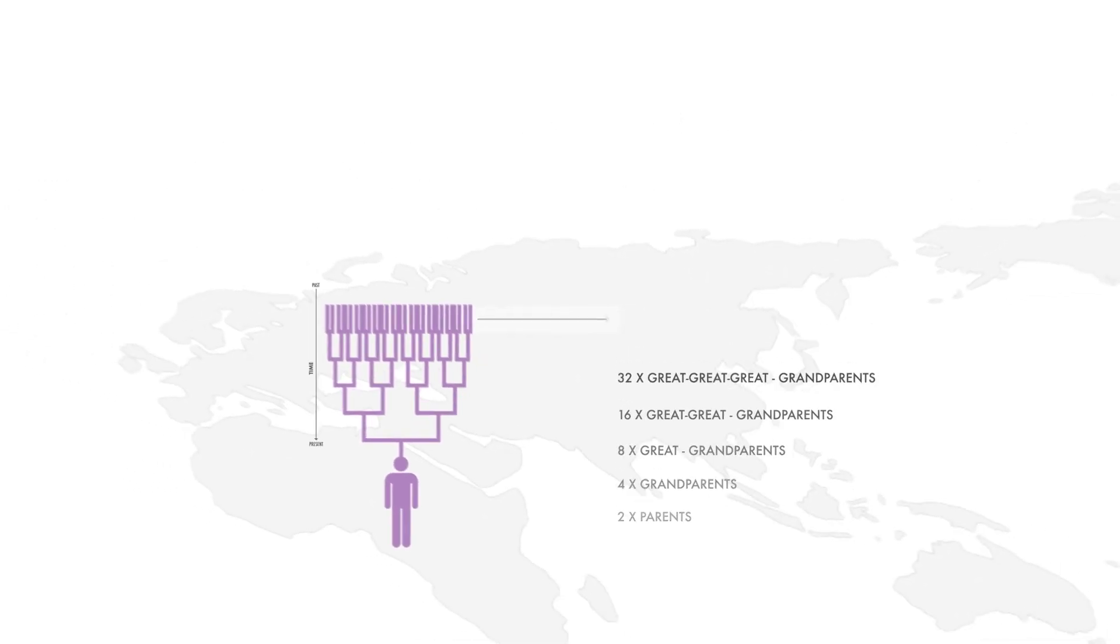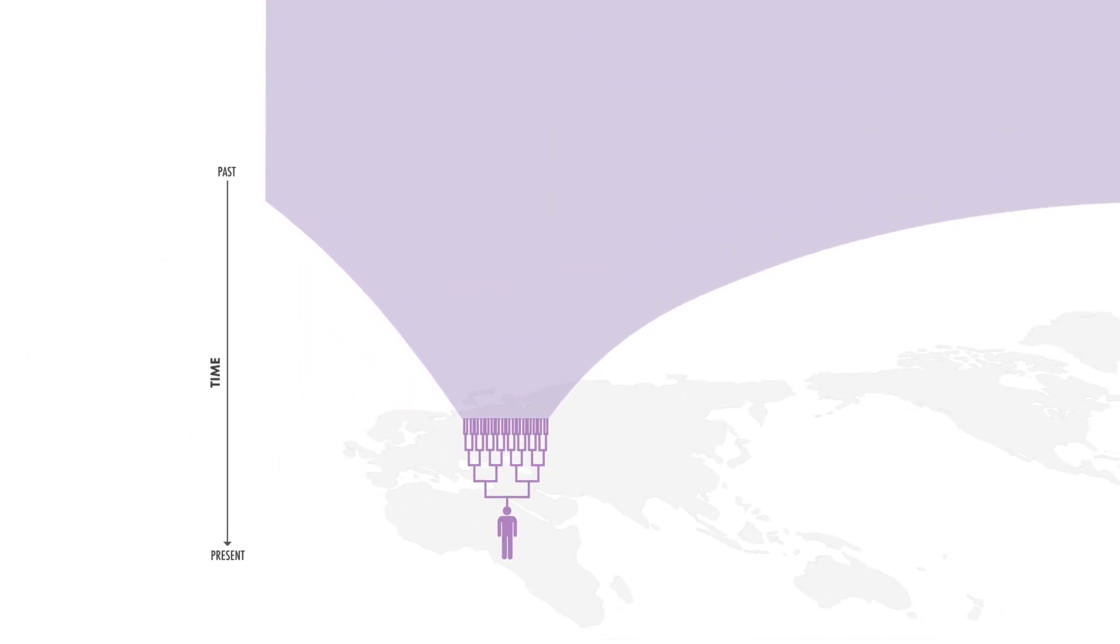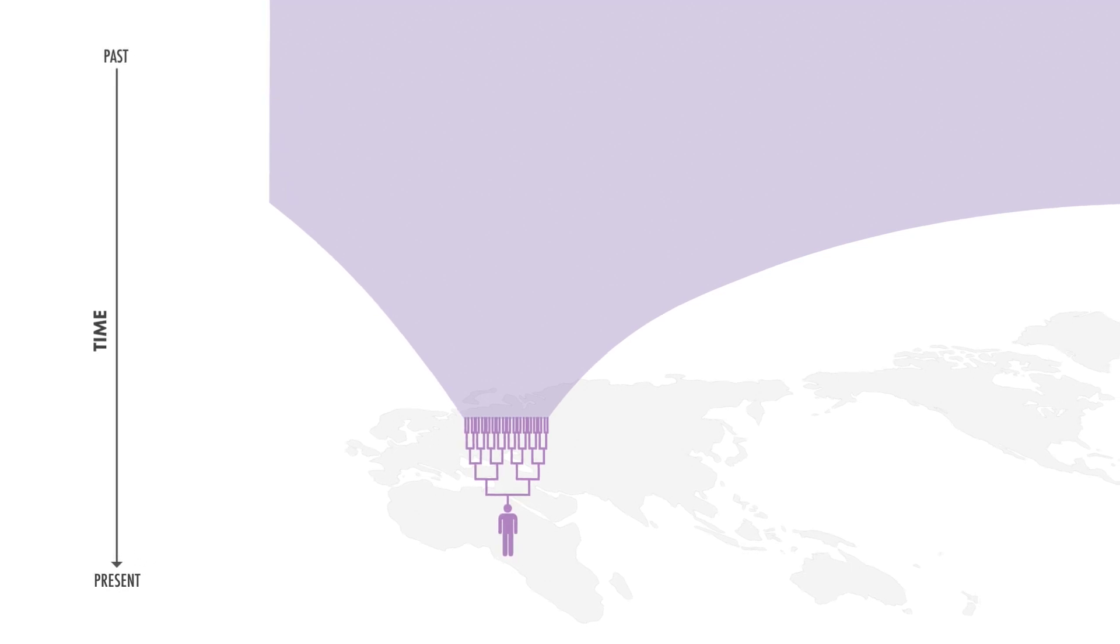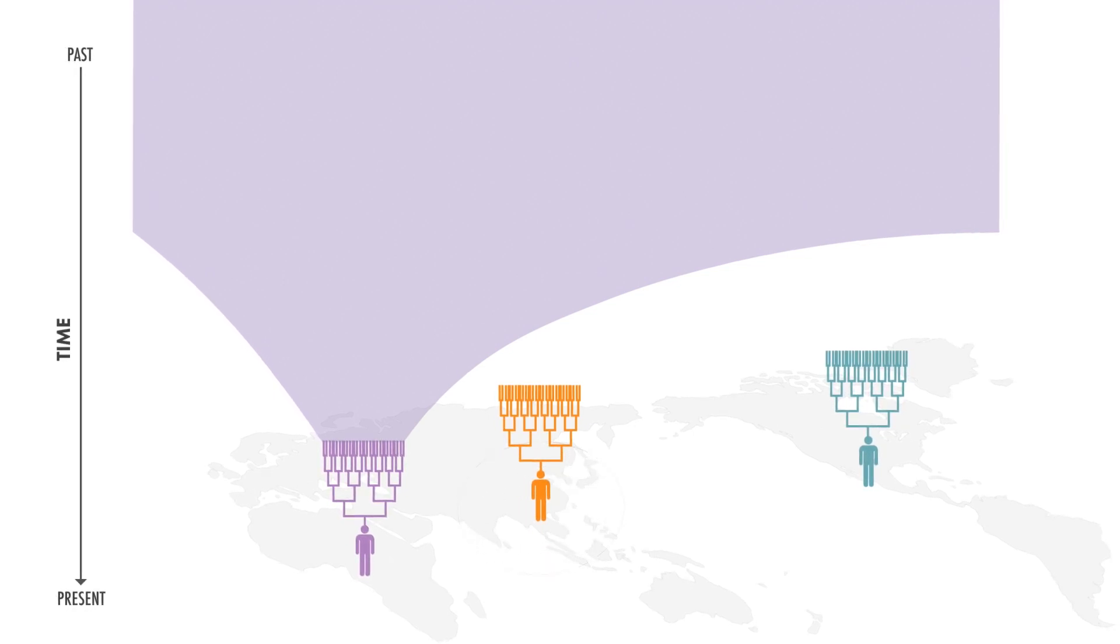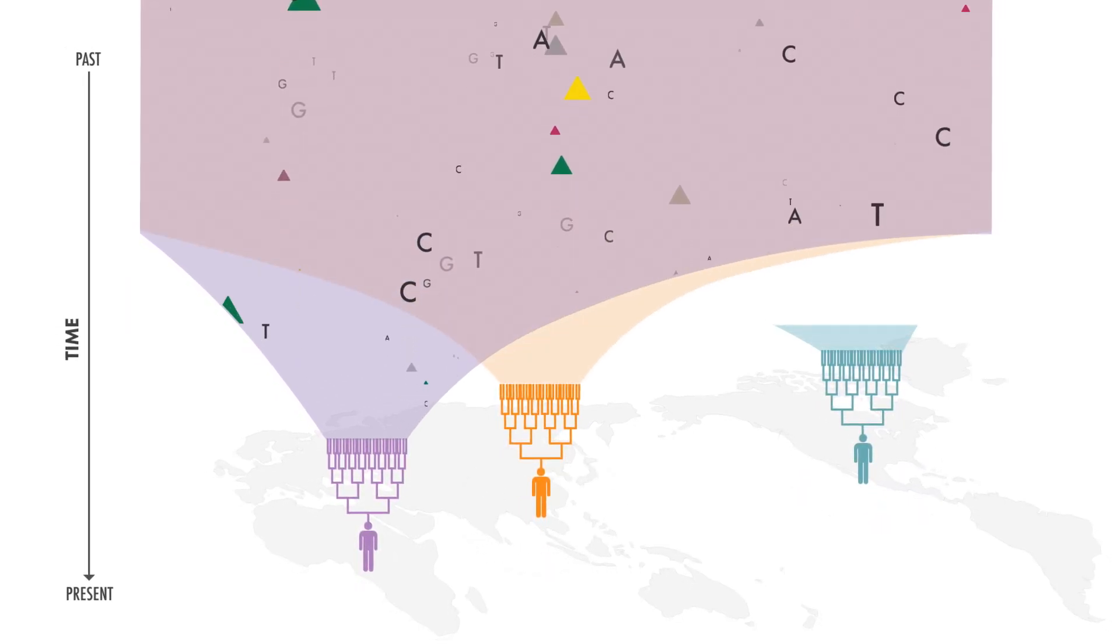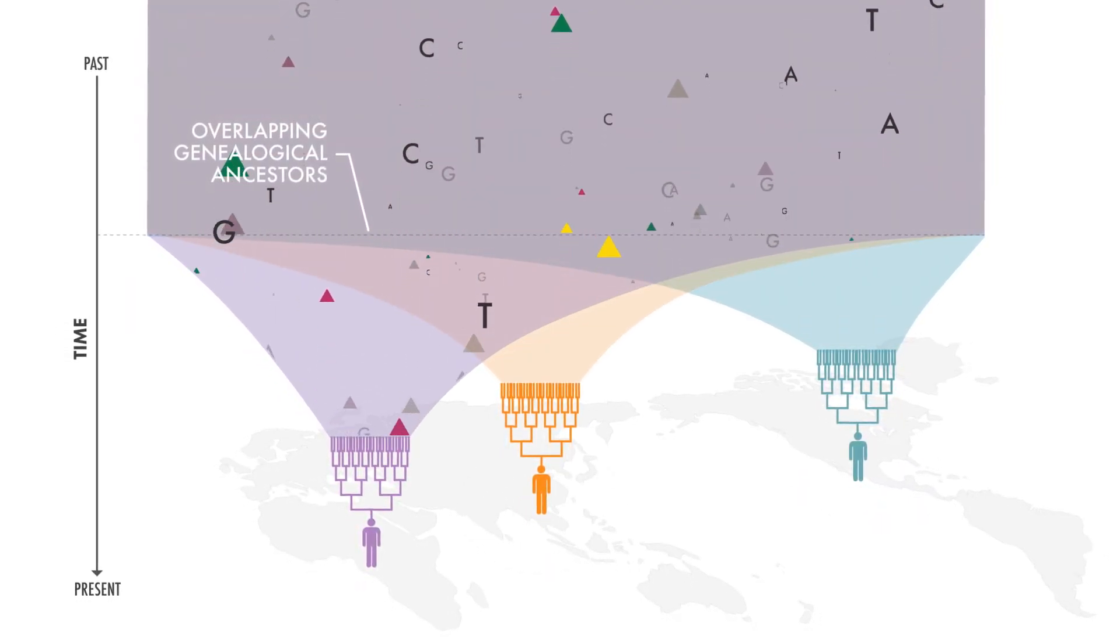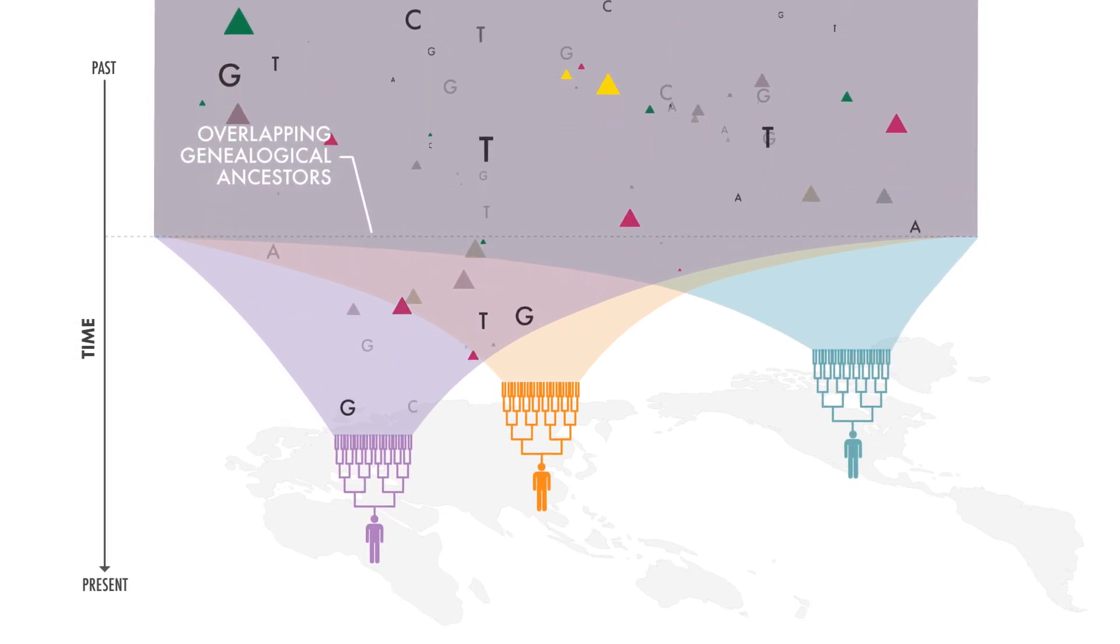These shaded areas going into the past represent the rapidly growing number of ancestors for each individual. If we consider these three individuals from different parts of the world, their genealogical ancestors overlap back in time relatively quickly because they have so many ancestors.